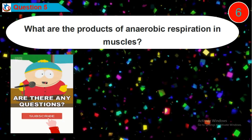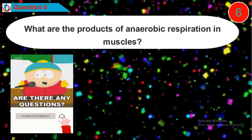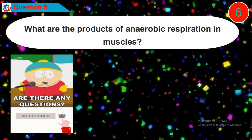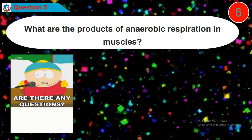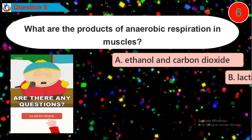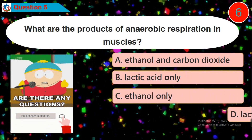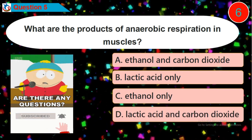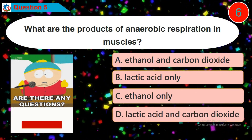Question 5: What are the products of anaerobic respiration in muscles? Is it option A, B, C, or D?